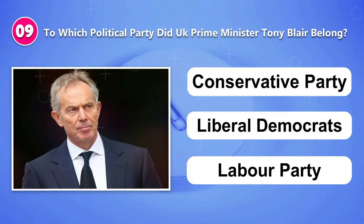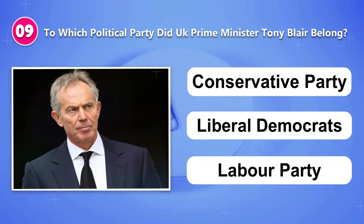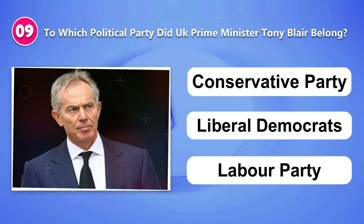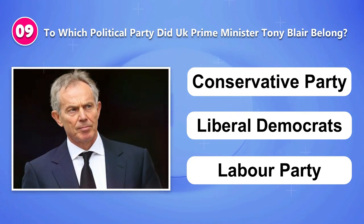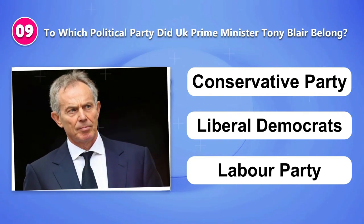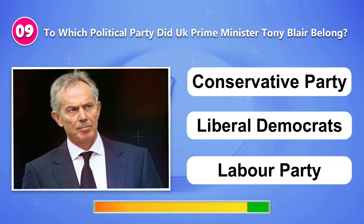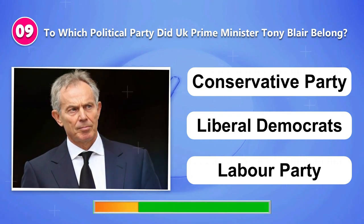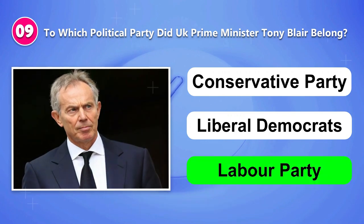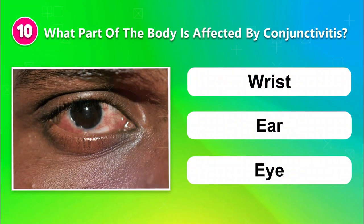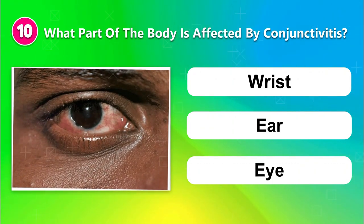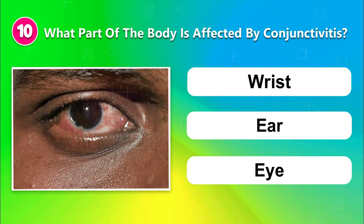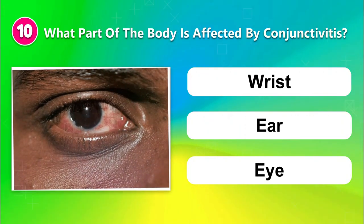Number nine: To which political party did UK Prime Minister Tony Blair belong? Conservative Party, Liberal Democrats, or Labour Party. Number ten: What part of the body is affected by conjunctivitis? Wrist, ear, or eye.